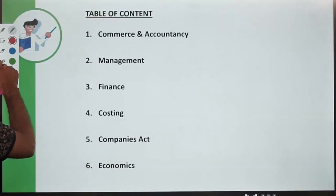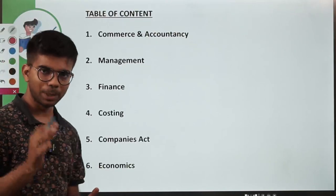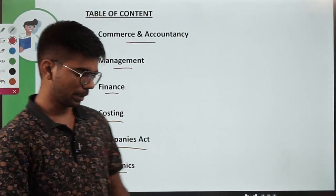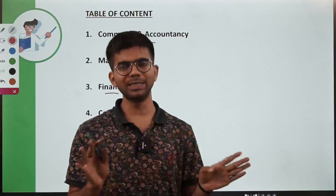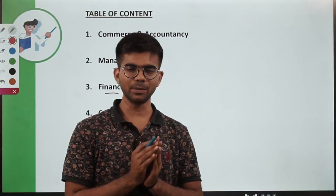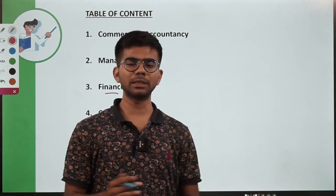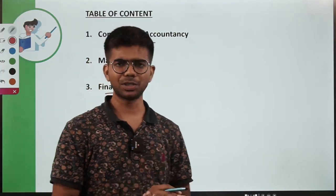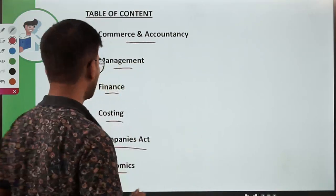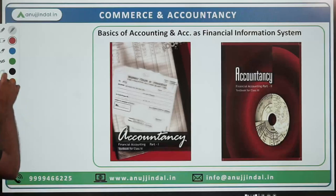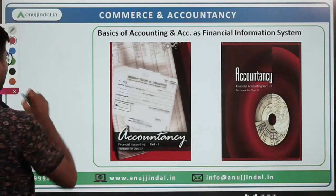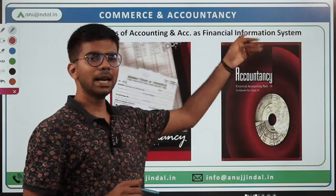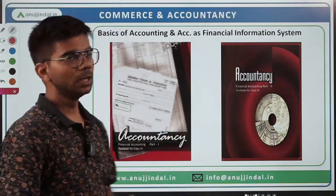Today I am going to discuss with you the book list for all 6 subjects of Paper 2 of SEBI — Commerce and Accountancy, Management, Finance, Costing, Companies Act, and Economics. Those who have enrolled in the courses do not need to refer to any book because the course is already very comprehensive in itself. But for those who are preparing on their own, they may refer to the books and sources which I am going to tell you now. I will tell you syllabus topic-wise, with the topic on top and which book you can refer to for that topic.